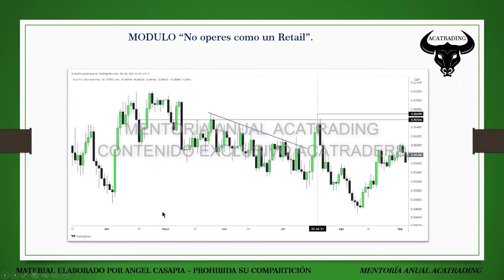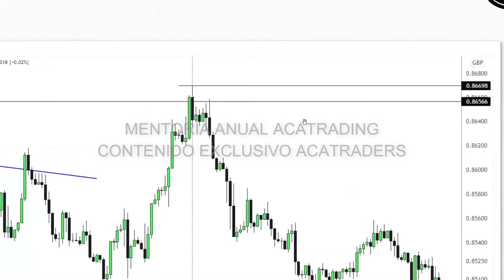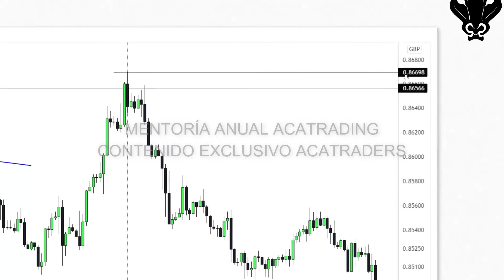Bajemos entonces de temporalidad. Vayamos a temporalidad diaria nuevamente manteniendo ese nivel semanal, y tal como lo hemos estudiado en el segundo mes, vamos a trasladar ese nivel a temporalidad menor. Por lo general esto es muy común verlo en temporalidad menor; el precio tiende a respetar nuevamente estos niveles. Una vez neutralizados los pips por encima de ese precio específico vamos a ver un retorno y luego se reutiliza ese nivel previamente marcado en temporalidad mayor. Vayamos a temporalidad de cuatro horas para entender qué sucede.